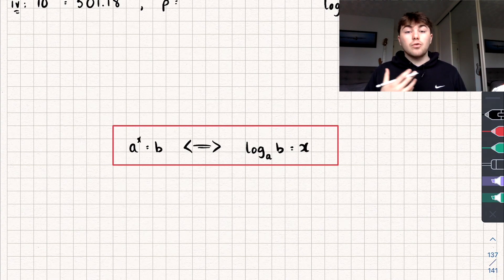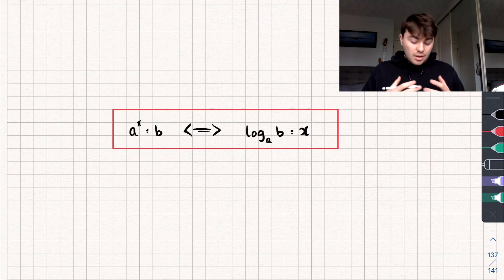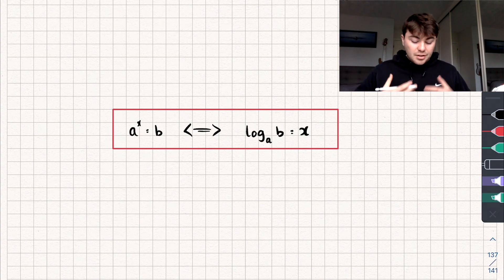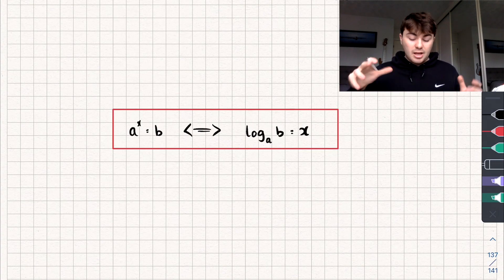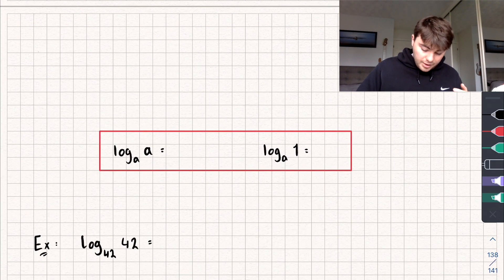So that's what logarithms are saying. Really you can think of it as taking the logarithm of something is kind of the inverse to taking the exponent of something or putting something to the power of something. They kind of undo each other, they're just inverses.